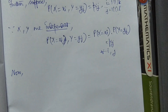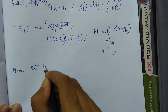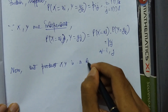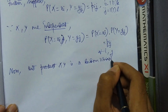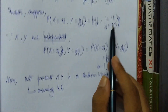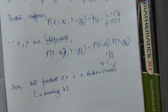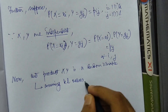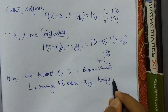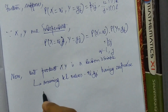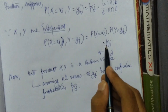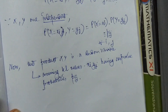Since this is a product law, we require the product XY. The product XY is also a random variable, assuming kl values — since i runs from 1 to k and j from 1 to l — taking values xi·yj with respective probabilities p_ij.